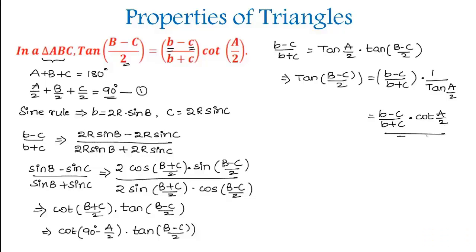This is the value of tan B minus C divided by 2. Hence we proved that tan B minus C by 2 equals B minus C divided by B plus C times cot A by 2.